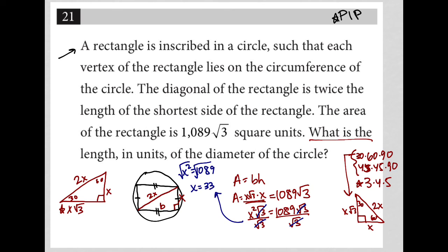X is equal to 33, but of course I don't want X, I want the diameter of the circle which is 2x. So that's why I'm going to say 2 times X is 66. So my final answer here is 66.